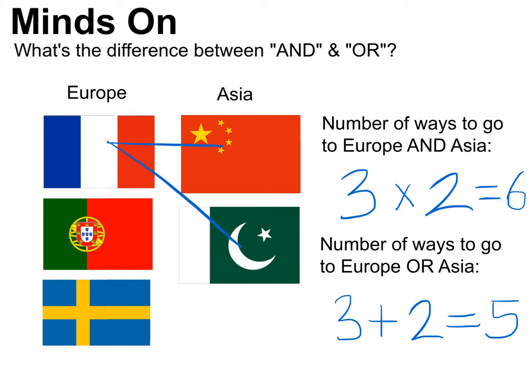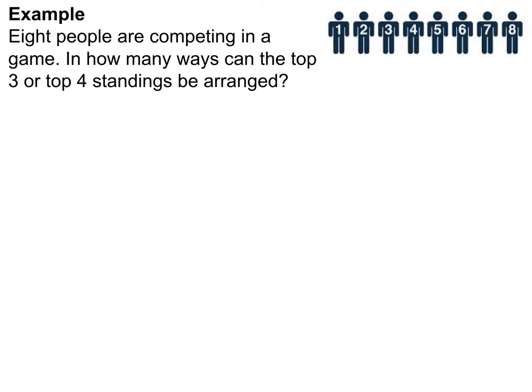Let's do a quick example. We've got eight people competing in a game, and we want to know how many ways the top three OR top four standings can be arranged. We can have either a top-three or a top-four standing — not both — so these are what we call mutually exclusive events.